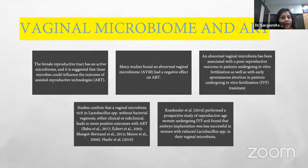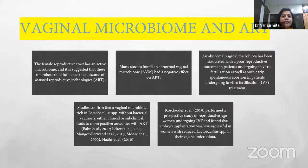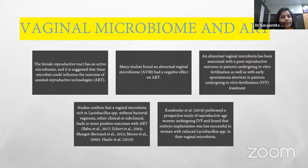Coming to the main topic: how ART is affected by this vaginal microbiome. The female reproductive tract has an active microbiome, and it is suggested that these microbes could influence the outcome of assisted reproductive technique. Many studies found that an abnormal vaginal microbiome has a negative effect on ART. An abnormal vaginal microbiota has been associated with poor reproductive outcomes, including implantation failure, IVF failure, and spontaneous abortion. Studies confirm that vaginal microbiota rich in lactobacillus without bacterial vaginosis gives a very good positive outcome in ART.